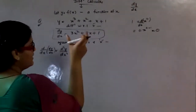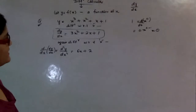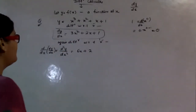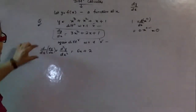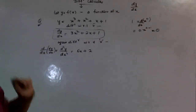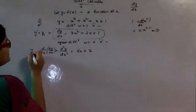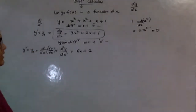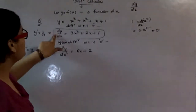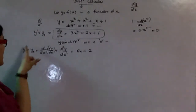Differentiating the result again, 3×2 gives 6x plus 2, and for the constant term it is 0. This is double differentiation. You can differentiate again and again until it reaches 0. The order for this is second — this is second-order differentiation. For first order we write y1 or y-dash; for second order, y2 or y-double-dash. These prime numbers represent how many times differentiation has been performed.